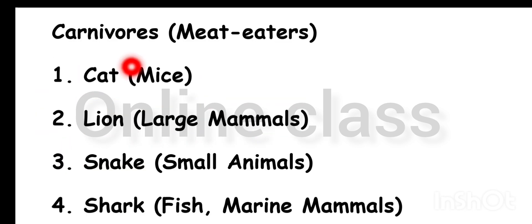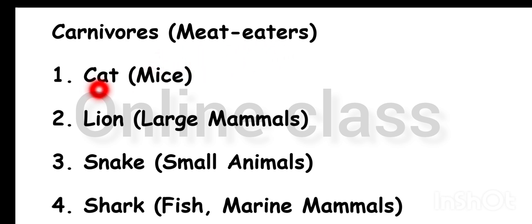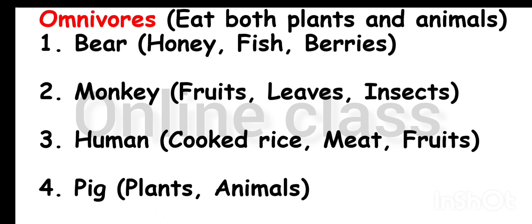The next category is carnivore organisms. There are animals including large mammals and snakes — these are called carnivores. This category is omnivores, that is, animals that eat both plants and animals.